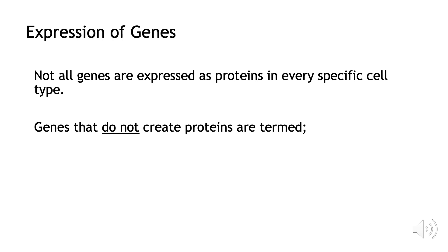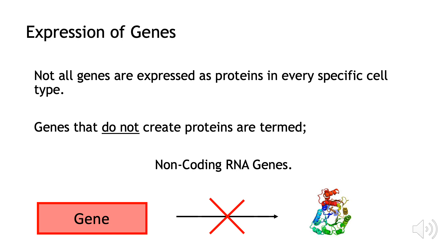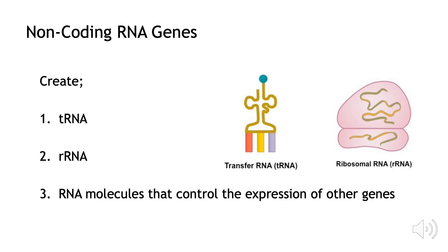It's important to understand that not all genes create proteins. Non-coding RNA genes do not create proteins, but they are responsible for creating other molecules. Our non-coding RNA genes are able to create tRNA, which carries specific amino acids to the ribosome in translation, and rRNA, which is one of the main components of the ribosome itself. Finally, they can create RNA molecules that control the expression of other genes.